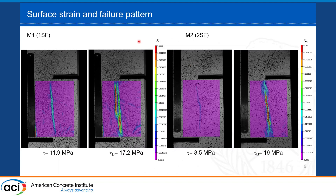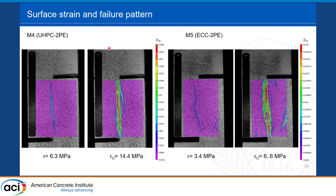The surface strain results from digital image correlation compare Mix 1 and Mix 2: despite different tensile behavior, under pure shear they show almost similar behavior — a crack forms, deformation localizes at the single crack, fibers provide bridging until peak, and then the specimen fails at that location. For Mix 4 and Mix 5 (strain hardening materials), under pure shear they also showed similar behavior to the strain softening materials, with only a slightly wider damage region, and overall similar ductility.